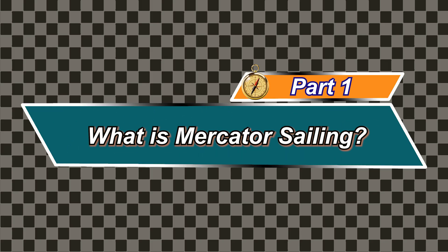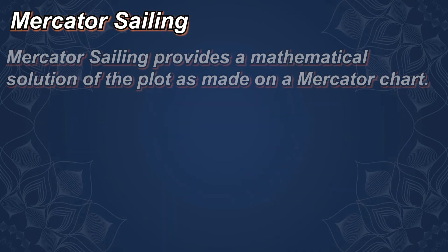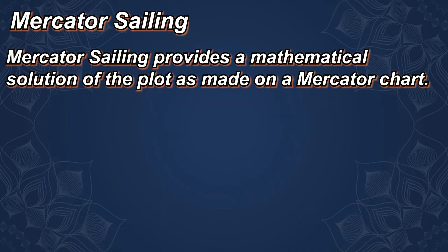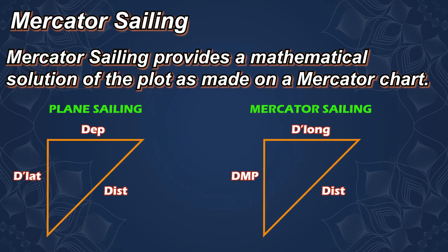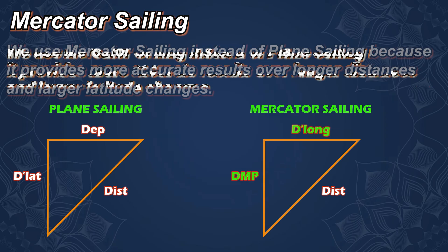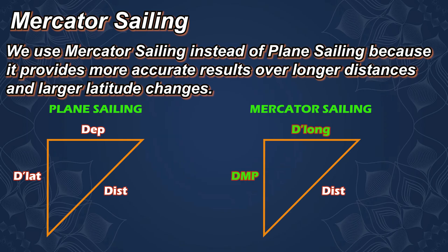Part 1: What is Mercator Sailing? Mercator Sailing provides a mathematical solution of the plot as made on a Mercator chart. It's based on the same principle as Plane Sailing but uses meridional difference and difference of longitude instead of difference of latitude and departure. We use Mercator Sailing instead of Plane Sailing because it provides more accurate results over longer distances and larger latitude changes.